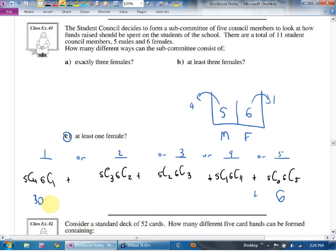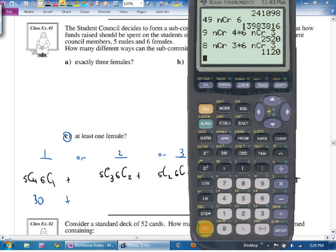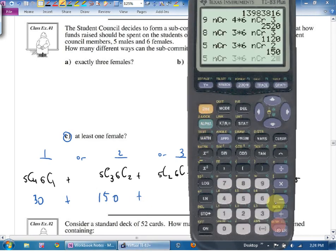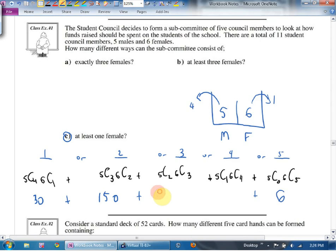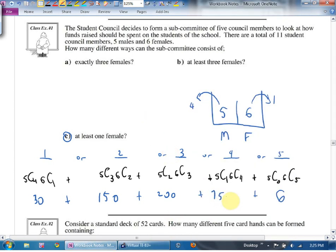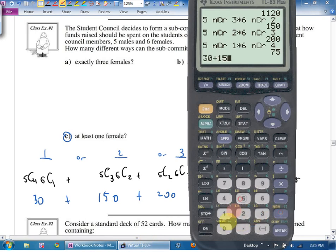All right, let's type this one. Five, oh, you know what? Just go second function, enter, and change the equation that you have. Five, choose three. One hundred and fifty. Plus. Make that a two, make that a three. Two hundred. Plus. Make that a one. Make that a four. Seventy-five. Okay. Thirty plus one fifty plus two hundred plus seventy-five plus six. I get four hundred and sixty-one. Anybody else? Yeah.